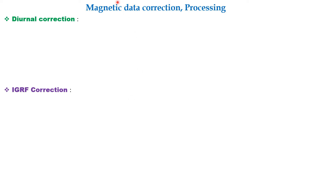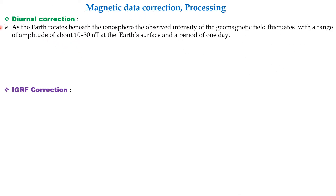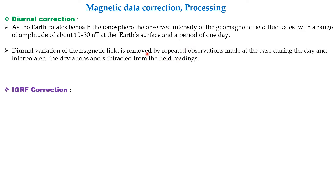For magnetic data corrections, the two main corrections are the diurnal correction and the IGRF correction. The diurnal correction accounts for the geomagnetic field fluctuating with an amplitude of about 10 to 30 nanotesla with a period of one day. It is removed by repeated observations at the base station during the day, which are subtracted from the raw data.